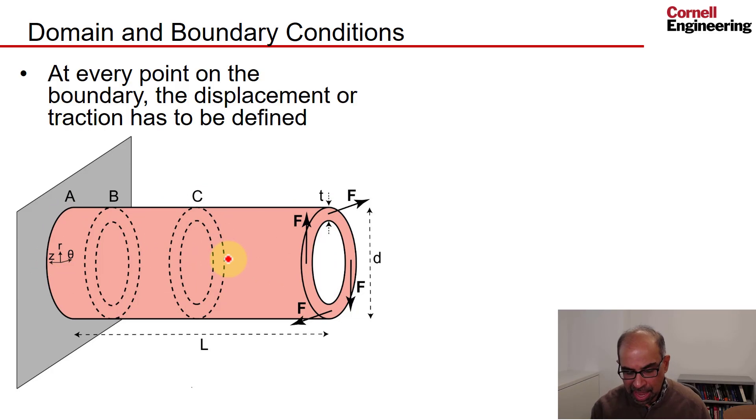At every point on the boundary the displacement or traction has to be defined. Both displacement and traction are vectors with three components because we are working in 3D. The traction is the force per unit area on a little surface segment, on a vanishingly small surface segment around that point. This is most easily understood by going to a 1D analogy.